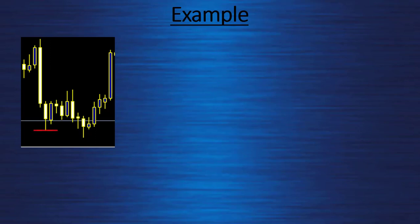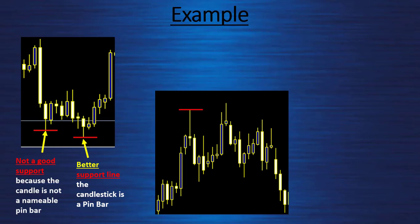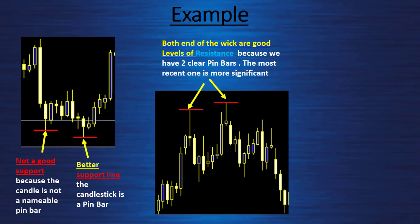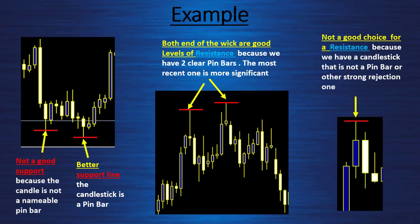Example: my red line marks the extreme of a specific wick — it's not a good support because the candle is not a nameable pin bar. The second one has a small body and can be called a pin bar, so it will be a better support line at the end of its wick. A very nice example: two levels with very nice pin bars make very good resistance levels. The most recent one is more significant — so if you have to choose between the oldest and the most recent spike, you will choose the most recent one.